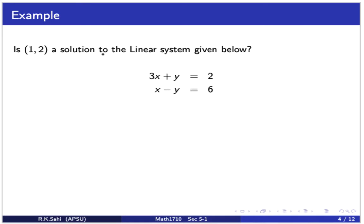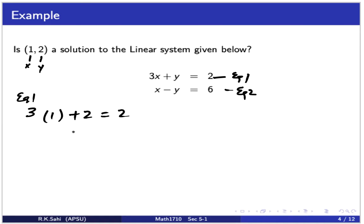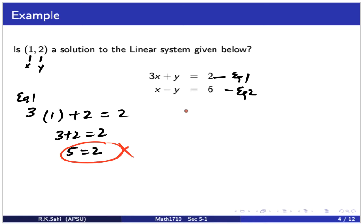Now, is the ordered pair (1, 2) a solution to the linear system? Let x equal 1 and y equal 2. This is equation 1 and equation 2. For equation 1: 3 times 1 plus 2 should equal 2. That means 3 plus 2 equals 2, so 5 equals 2. That doesn't make sense — 5 can never equal 2. This ordered pair doesn't even satisfy equation 1, so we don't have to bother with equation 2. Therefore, (1, 2) is not a solution.